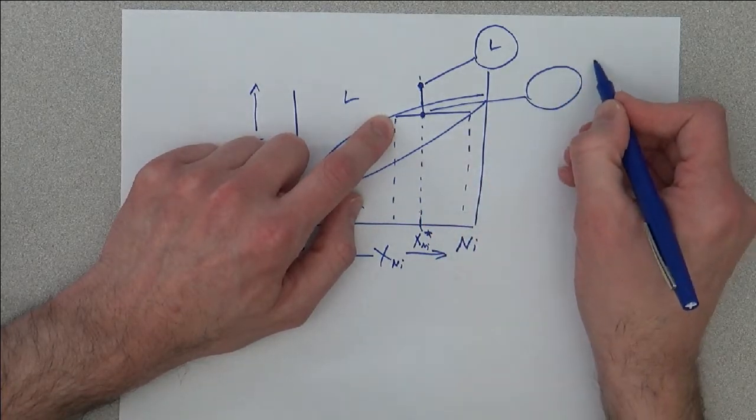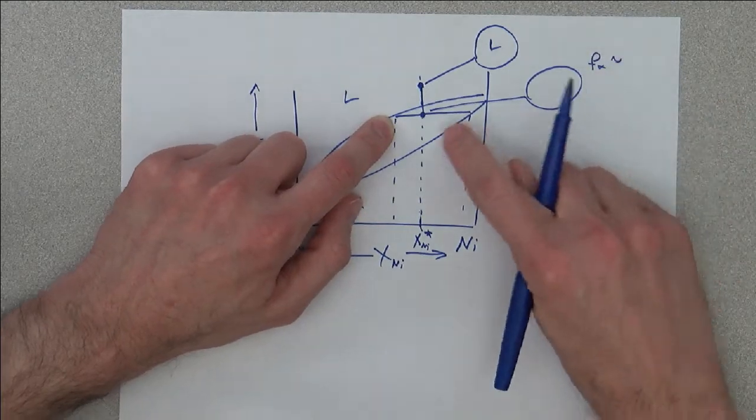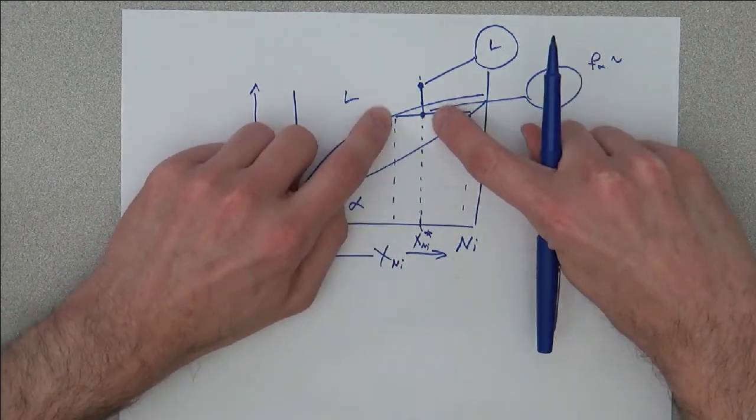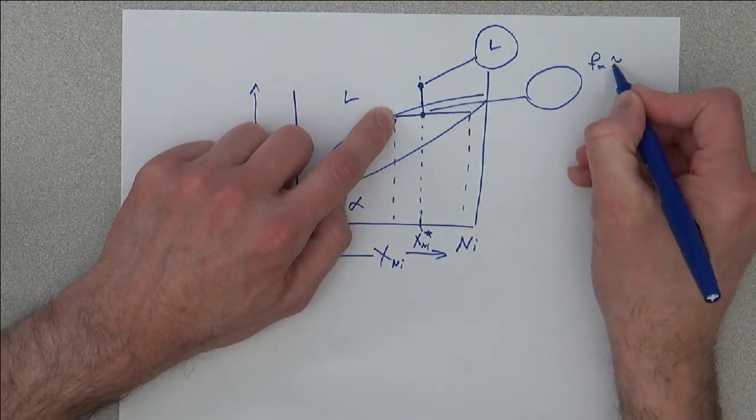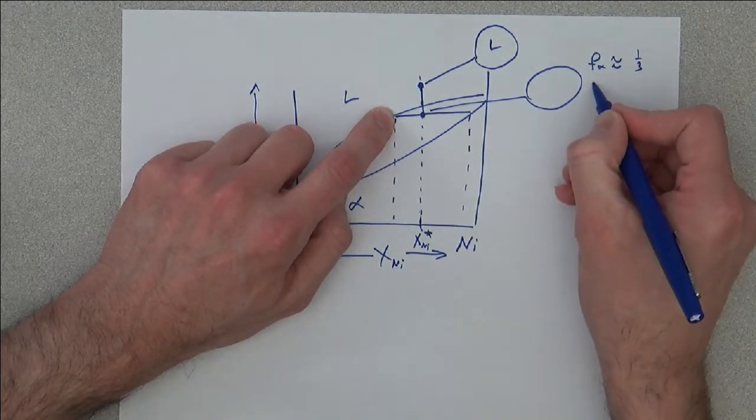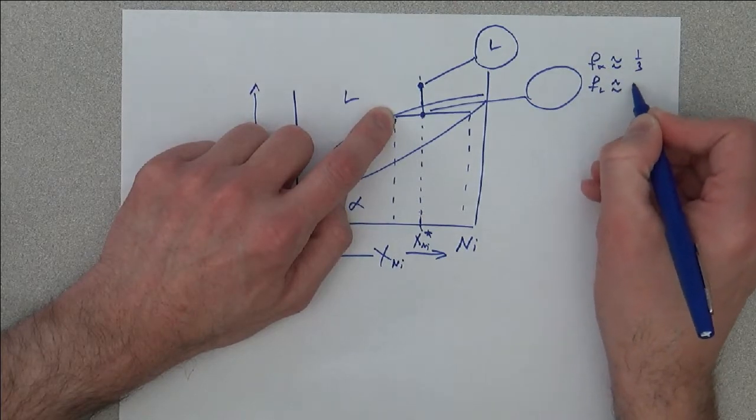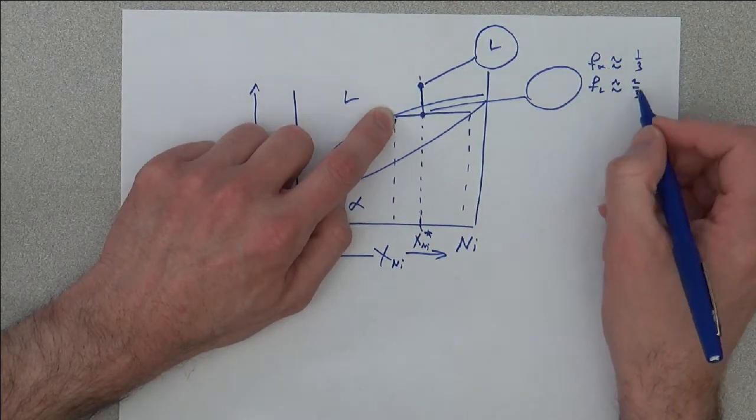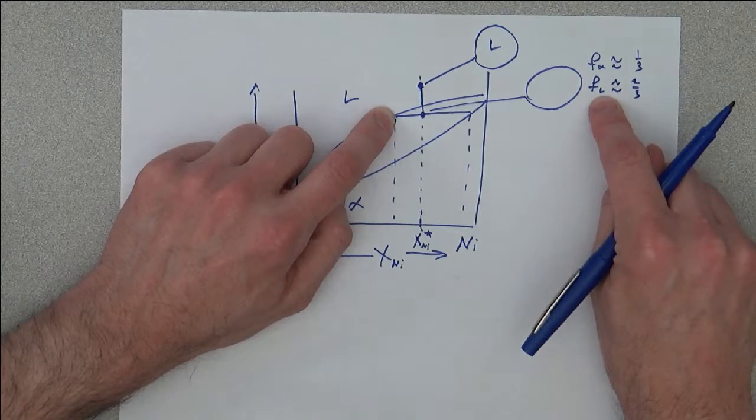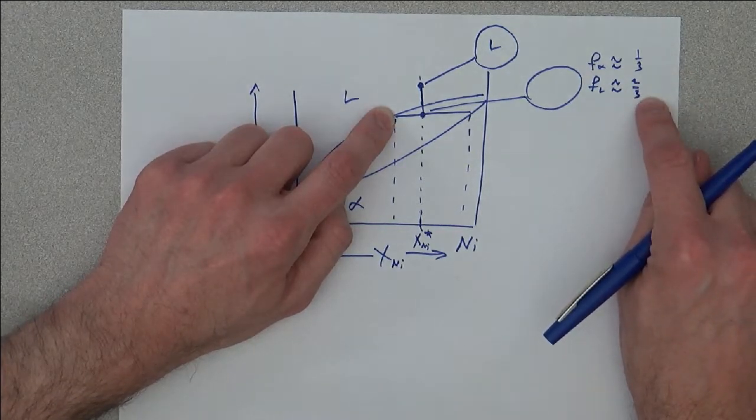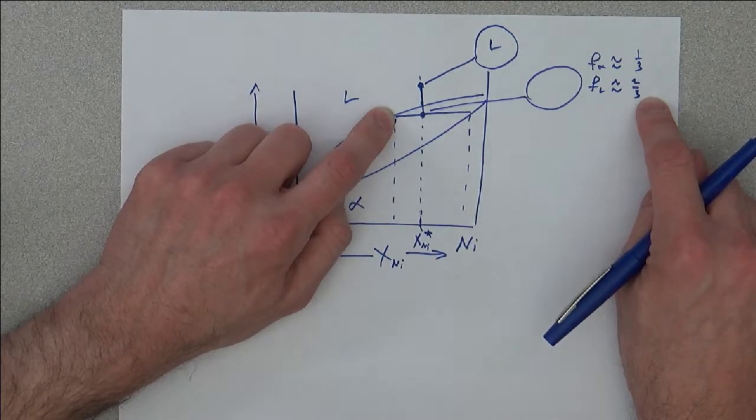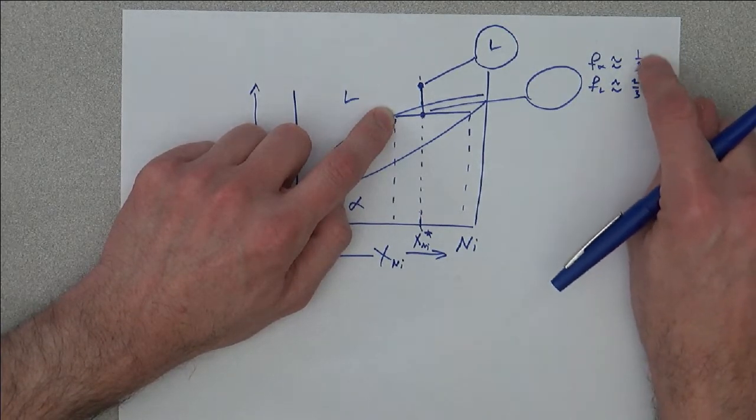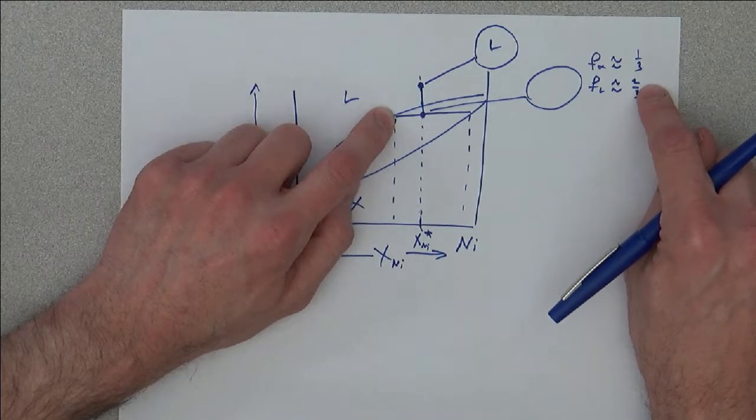That there's going to be around, at least the way I drew it, f_alpha is around one-third maybe, which makes fraction of liquid around two-thirds. The fractions of the phases present have to sum to one, so if you calculate one, the other you automatically get by taking one minus.